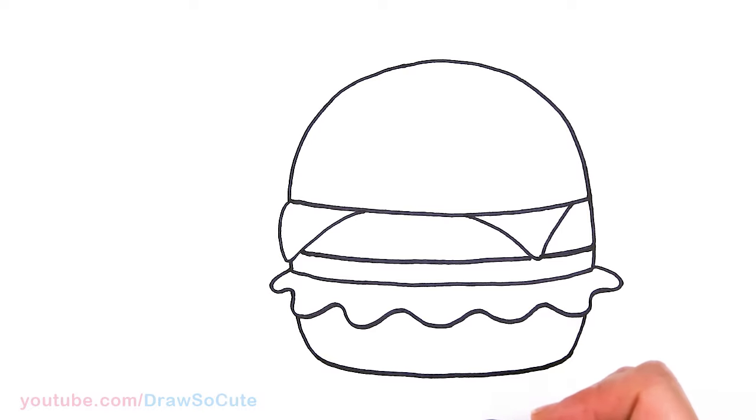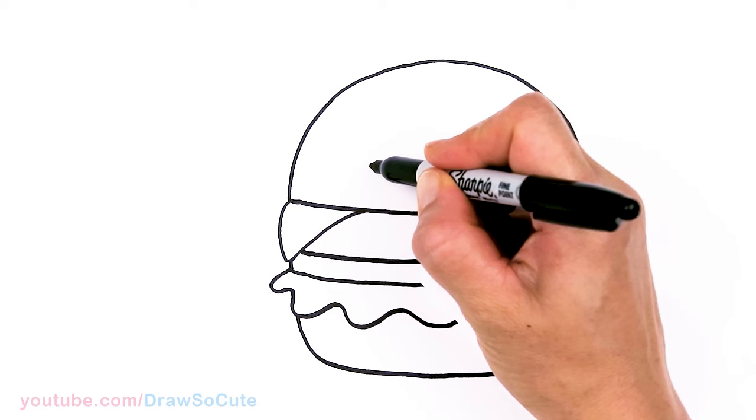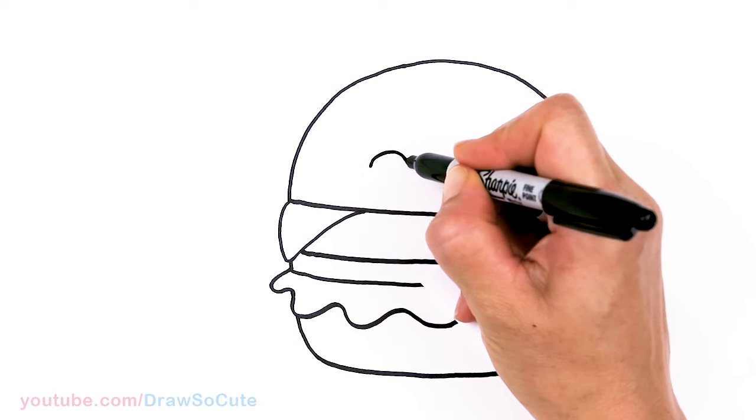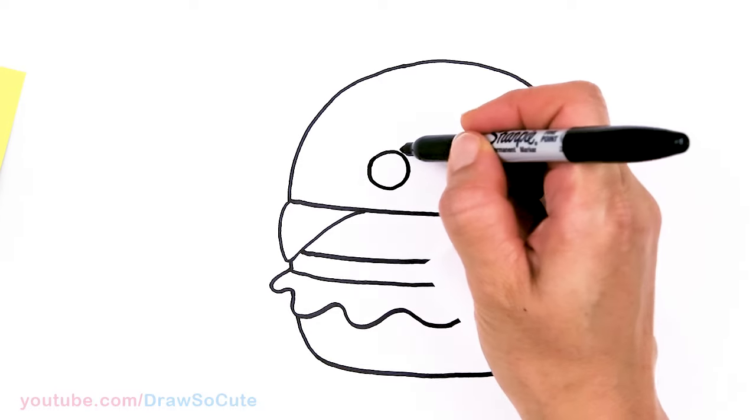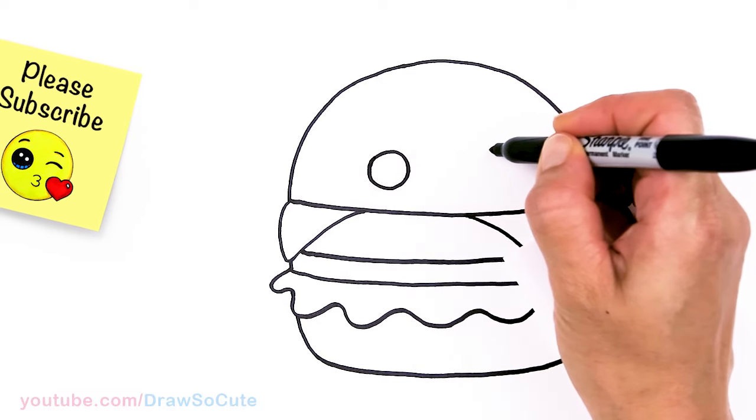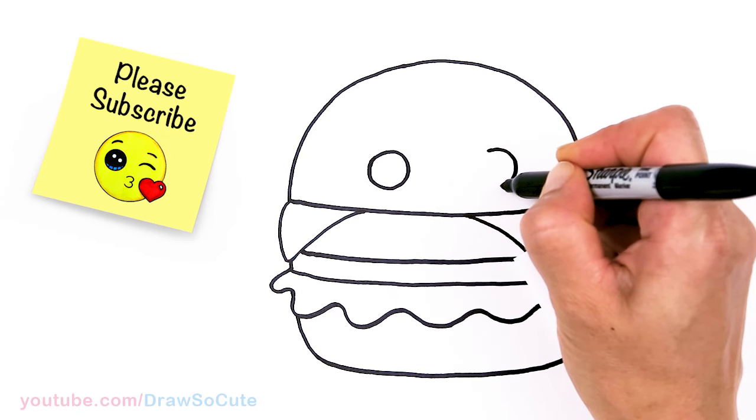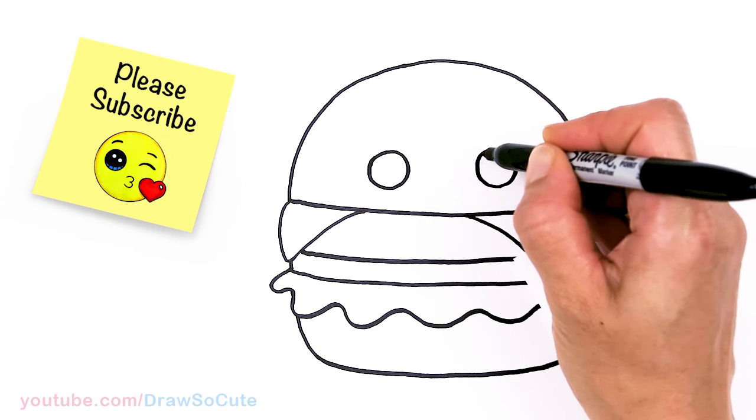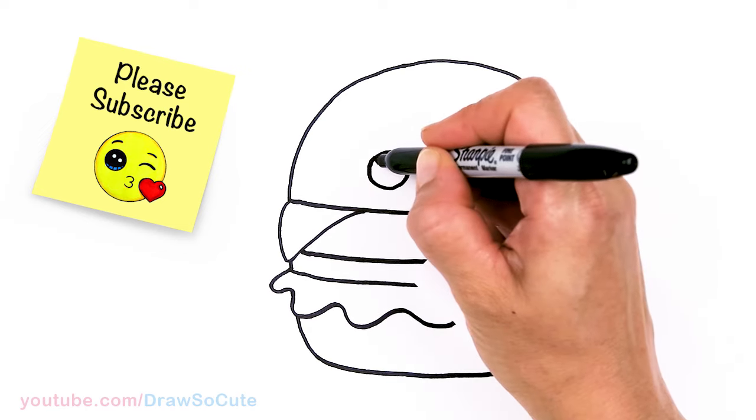But now to make it extra cute and a squishmallow. I'm going to come right here and add some eyes. So about right here. Just add a circle. And come right across and draw another circle. And making them Draw So Cute eyes.